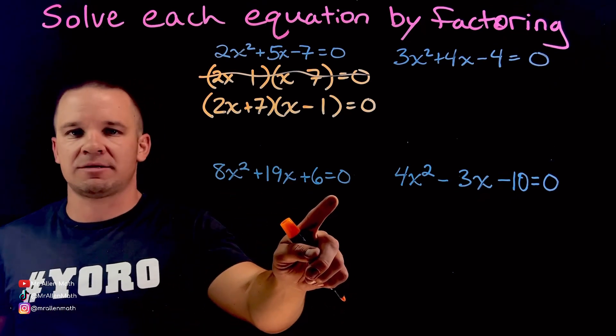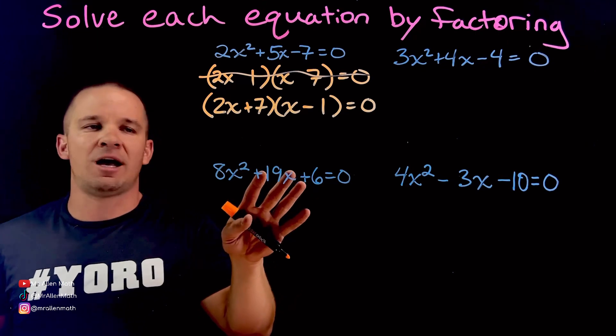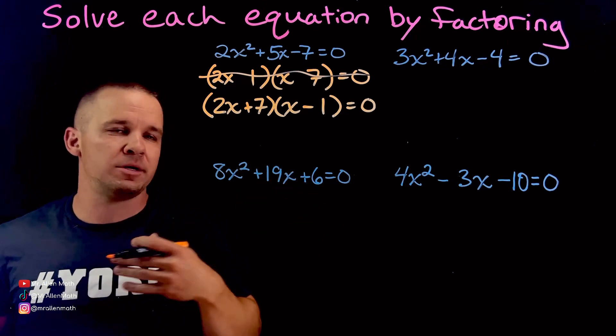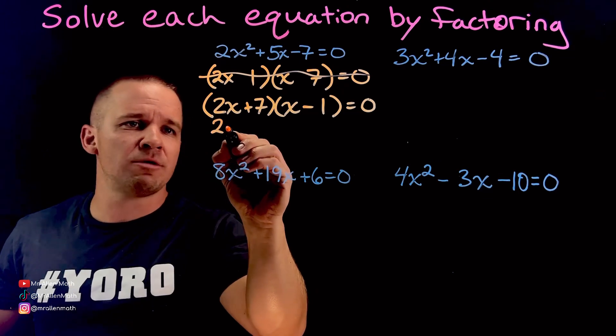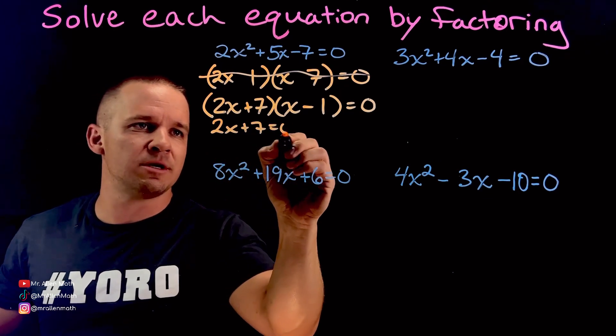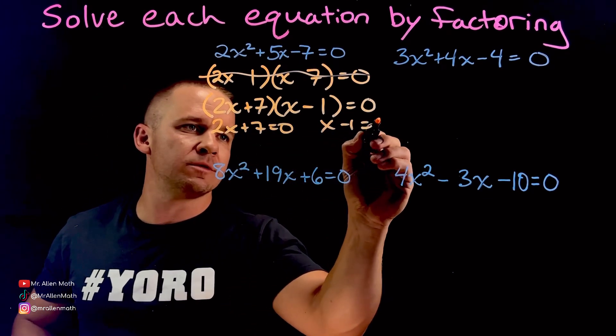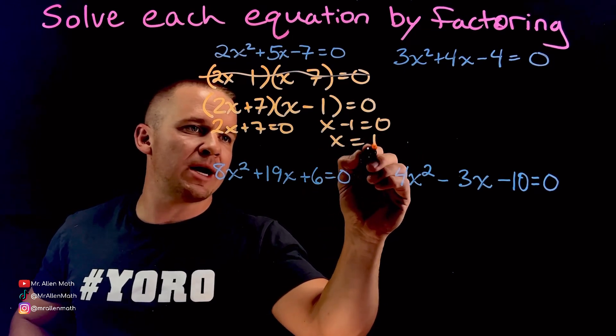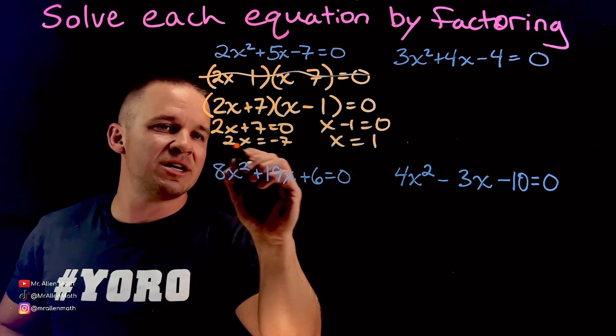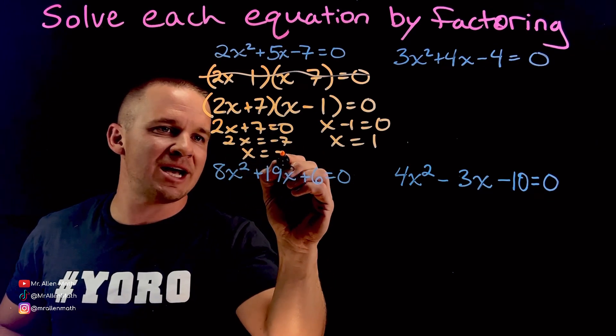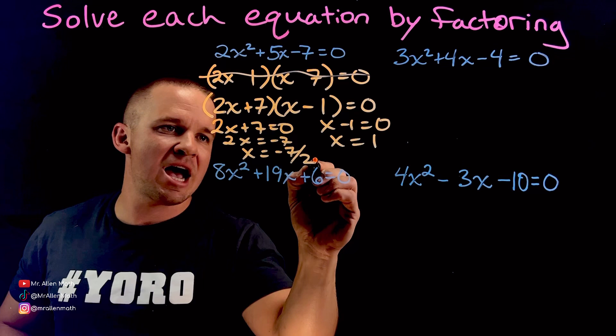This guy right here, I ain't touching this with guess and check. It's going to be a lot of work. Better methods for that, in my opinion. And I'm making the video, so it's my opinion. Now I'm going to set these equal to 0. I got 2x plus 7 equals 0. And x minus 1 equals 0. Here I'm going to get x equals positive 1. Here I've got to subtract 7. So I got 2x equals negative 7. Then divide by 2. I get x equals negative 7 halves.